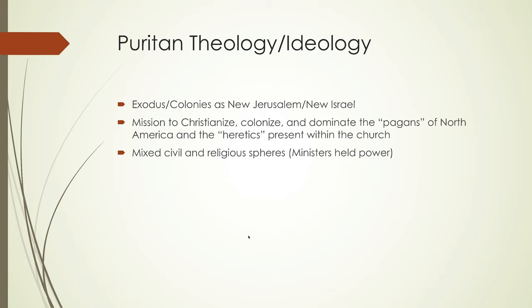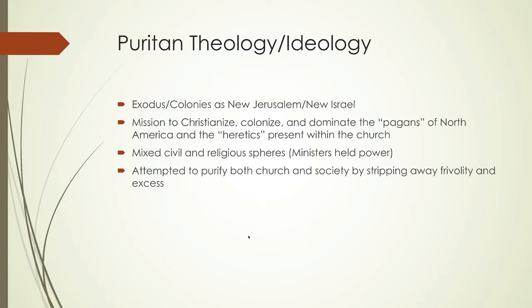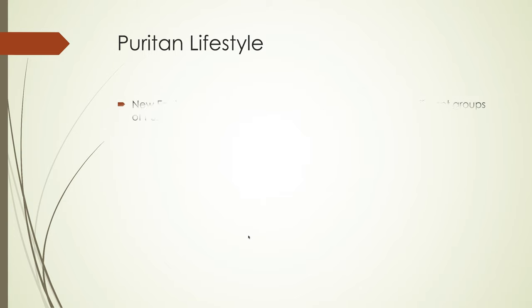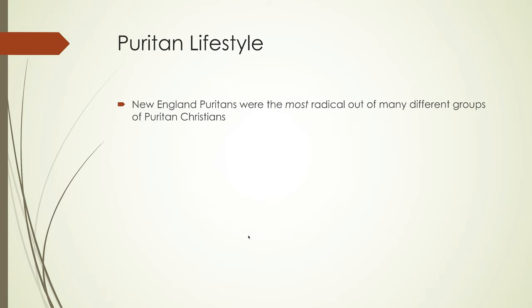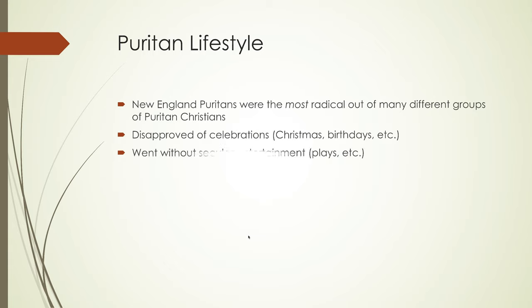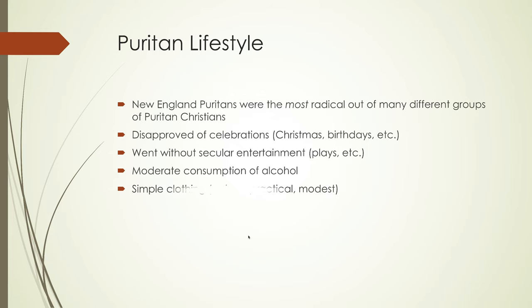By mixing the civil and religious spheres — for example, placing ministers in positions of power — they attempted to purify both the church and the greater society and culture by stripping away frivolity and excess. The New England Puritans were the most radical here, disapproving of celebrations including Christmas and birthdays. They also went without secular entertainment like plays, and they only enjoyed a moderate drinking of alcohol. Their clothes were simple, serious, practical, and modest.